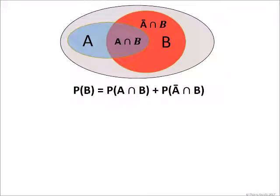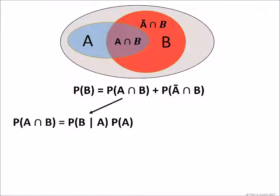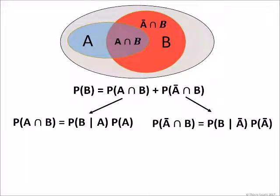We must return to our Venn diagrams. We can say that the probability of B is the sum of the probability of A intersection B, plus the probability of not A intersection B. We saw earlier how to obtain P of A intersection B. And in the same way, we can obtain P of not A intersection B, which equals P of B given not A multiplied by P of not A.